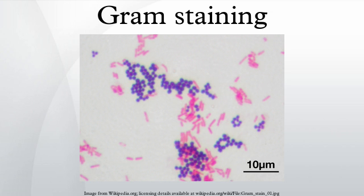Gram positive bacteria have a thick mesh-like cell wall made of peptidoglycan, and as a result are stained purple by crystal violet, whereas Gram negative bacteria have a thinner layer and do not retain the purple stain, being counter-stained pink by safranin. There are four basic steps of the Gram stain: applying a primary stain to a heat-fixed smear of a bacterial culture; heat fixation kills some bacteria but is mostly used to affix the bacteria to the slide so that they don't rinse out during staining; the addition of iodide, which binds to crystal violet and traps it in the cell; rapid decolorization with ethanol or acetone; and counter-staining with safranin.